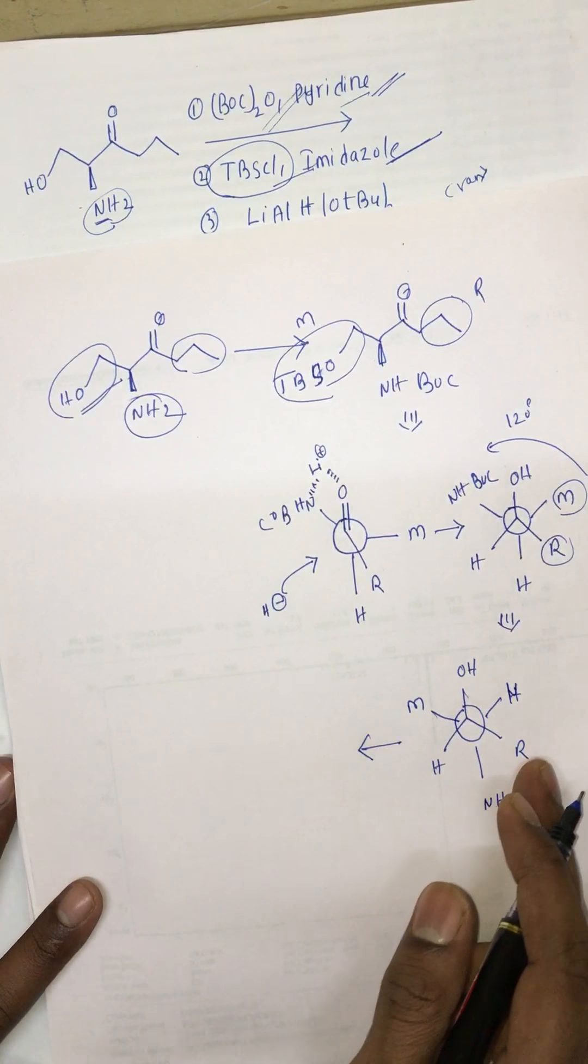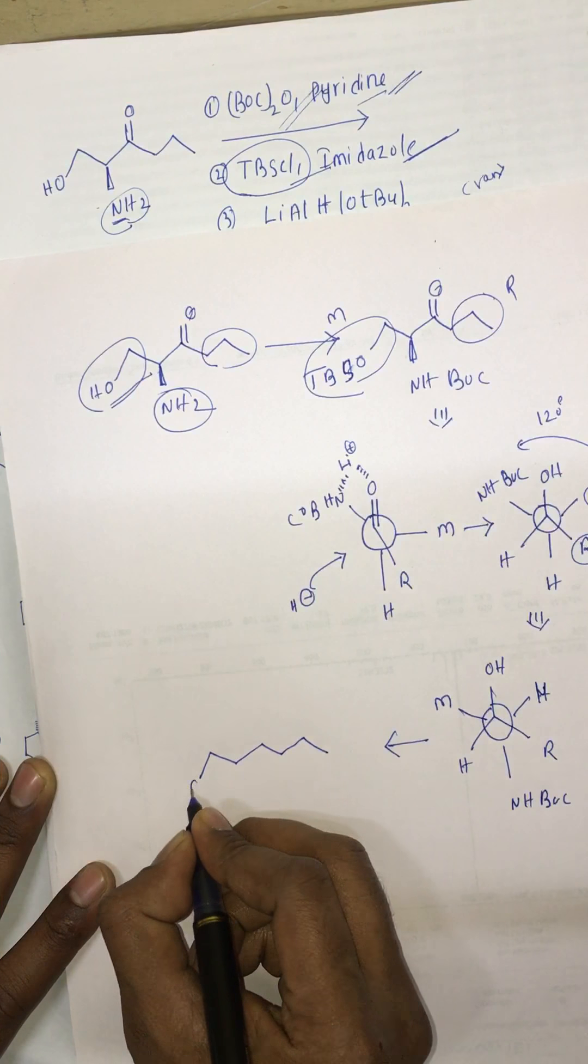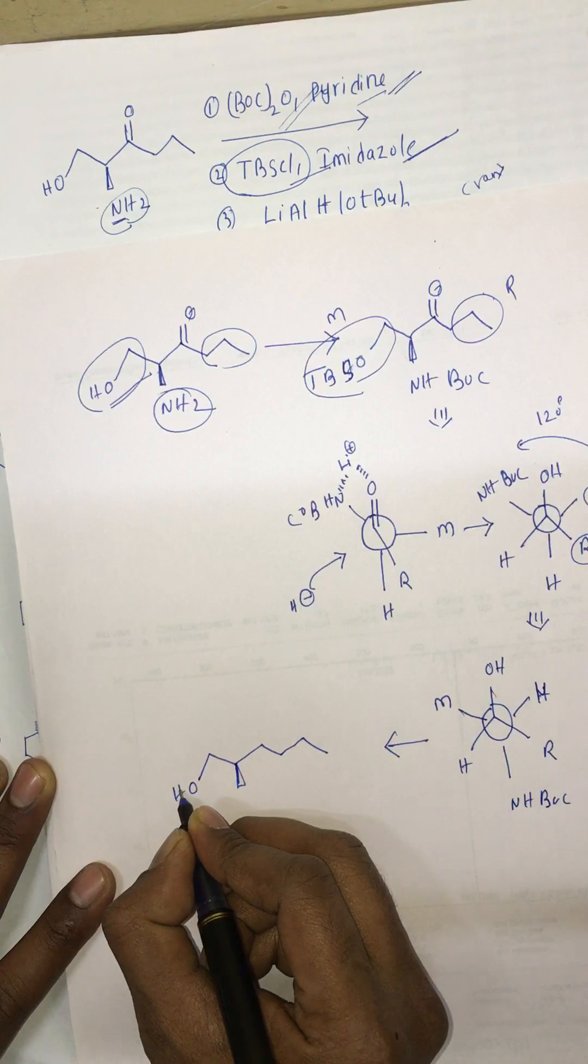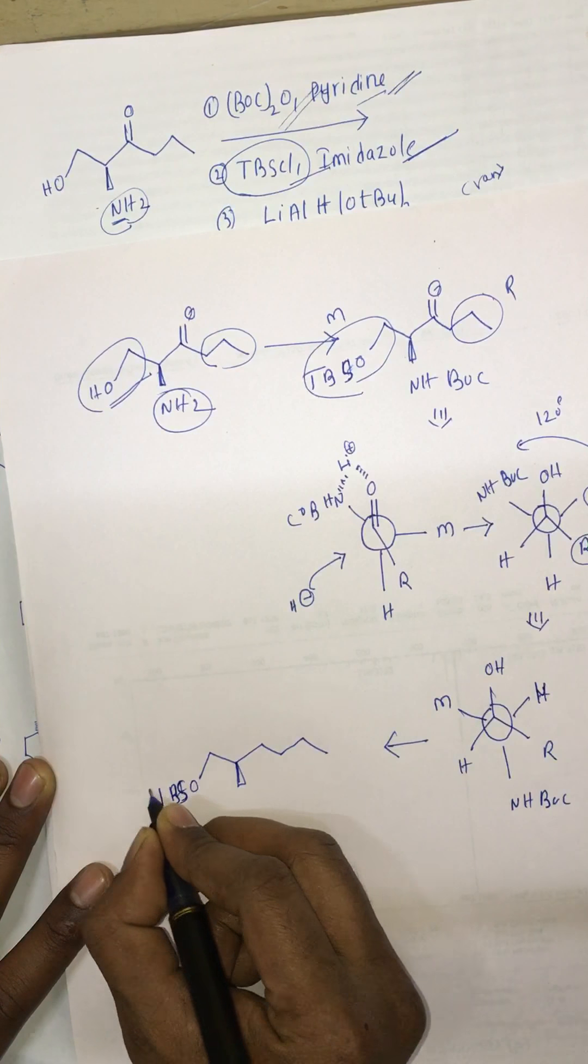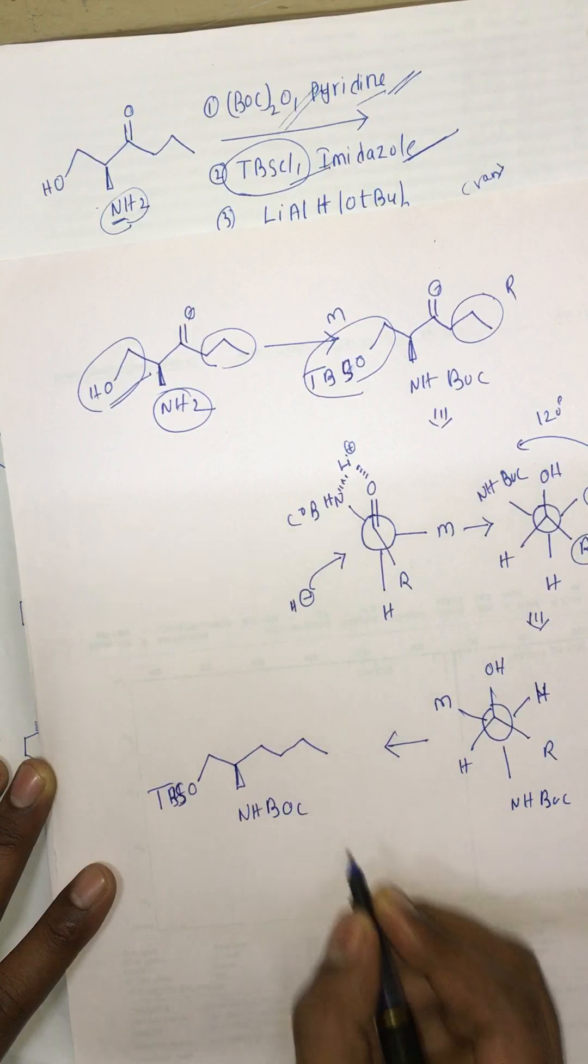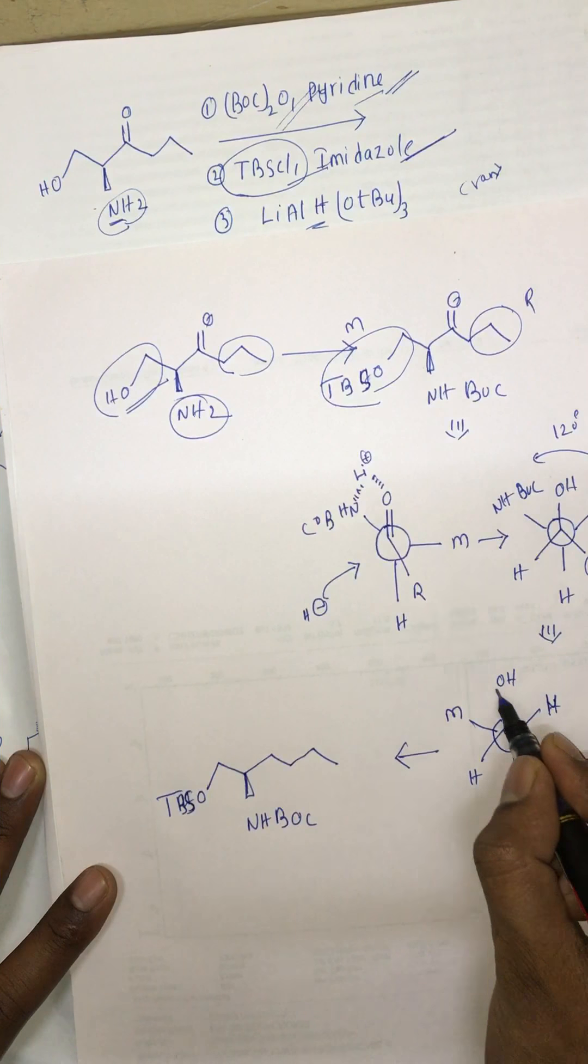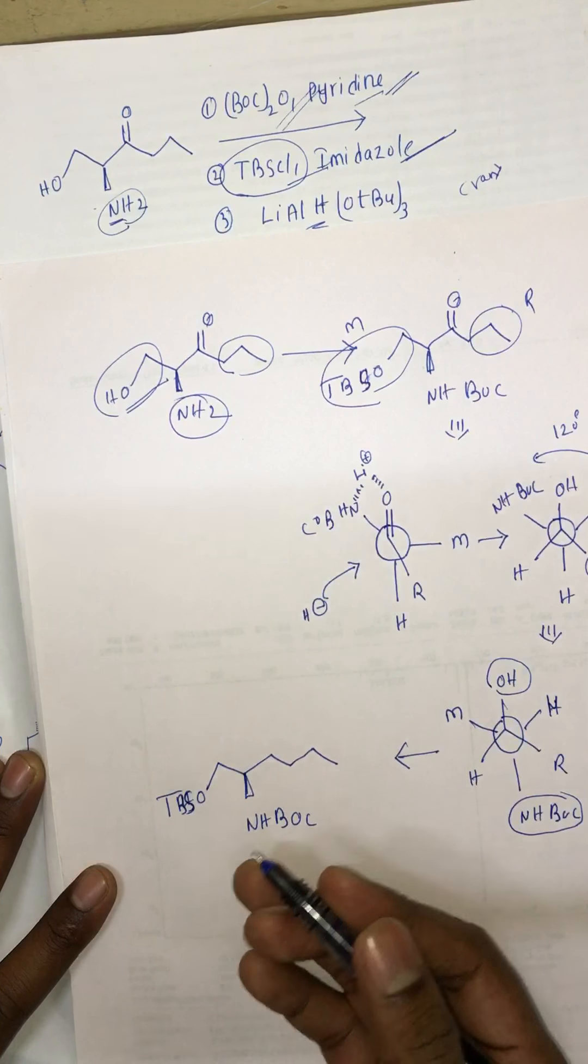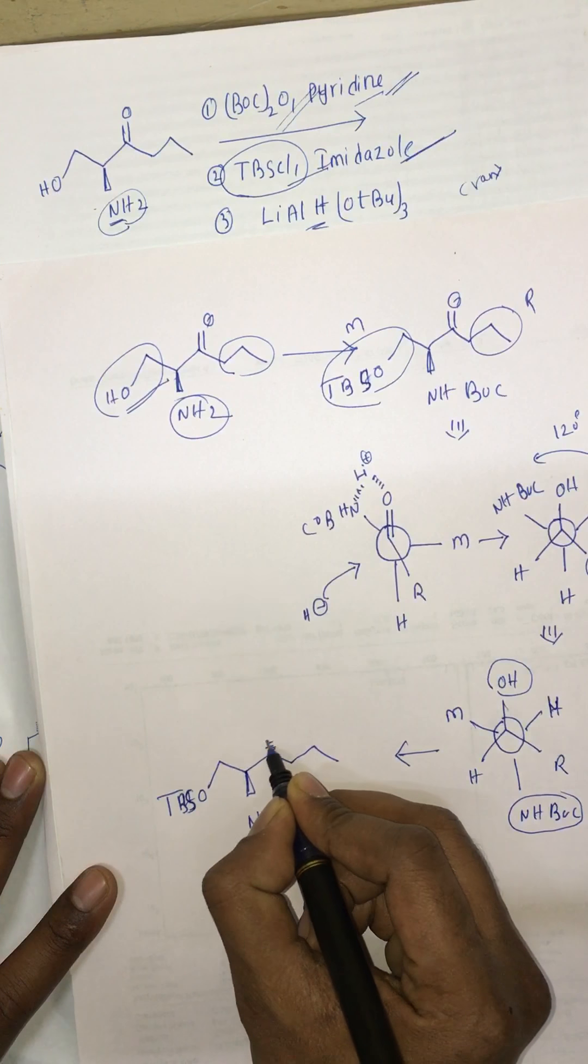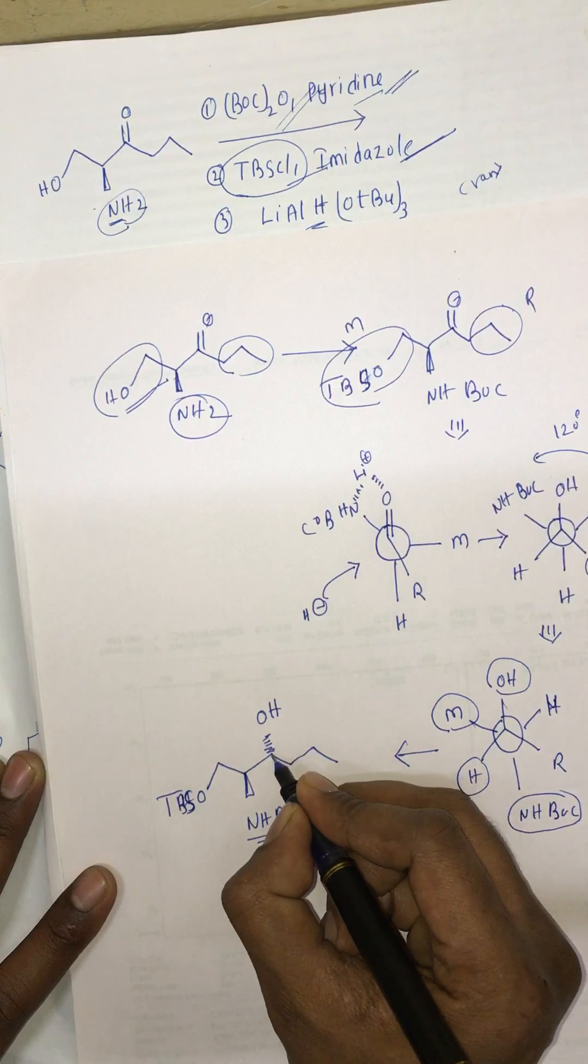Now they are anti-periplanar and we can keep them on the plane. This is OH, this is OSPT, this is NHBOC. See, NHBOC and OH are opposite each other - that means this is above the plane and OH comes below the plane. M and hydrogen are on the same plane. This is the product.